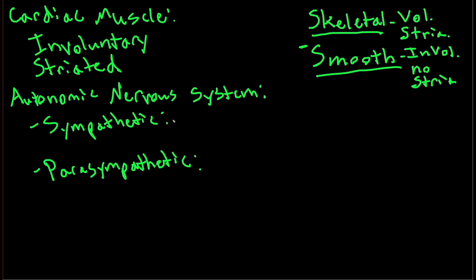These two systems are always competing. It's important to understand that sympathetic and parasympathetic don't actually cause cardiac myocytes to contract — they just alter the rate at which contraction occurs. Sympathetic increases heart rate, as it's famously associated with fight-or-flight, and parasympathetic decreases heart rate, associated with rest and digest.